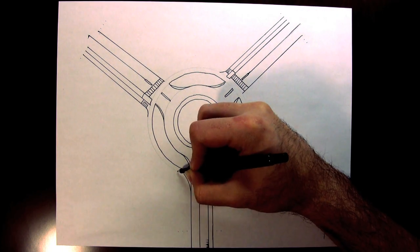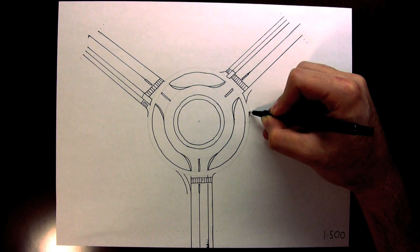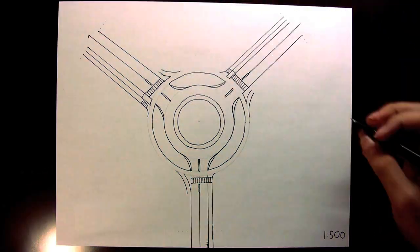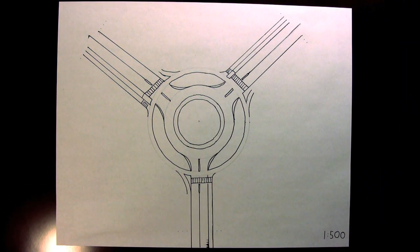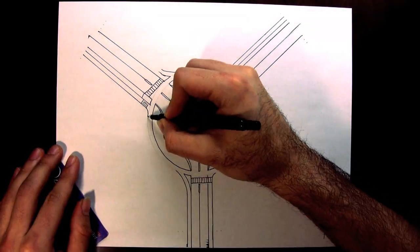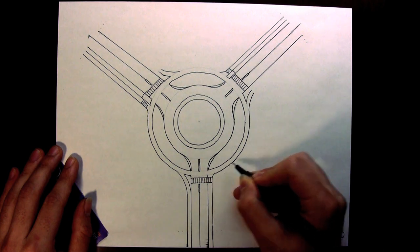The bicycle paths heading away from the roundabout should diverge as early as possible to make it easier for drivers to tell whether a bicycle is continuing around the circle or going to leave the roundabout. Now it's just a matter of filling in the blanks to complete the shape of the bicycle paths.